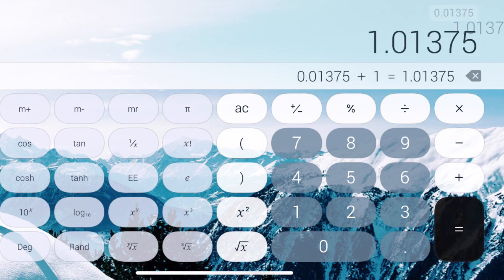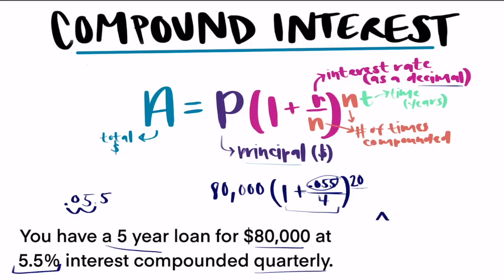Then you're going to want to take that to the 20th power. So you're going to want to use like either your carets or it might be X to the Y, whatever your exponent button is.